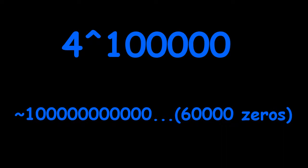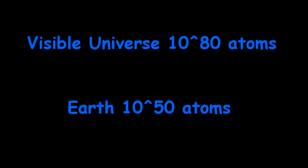By comparison, the number of atoms in the known universe is 10 to the 80, 80 digits, and in the Earth 10 to the 50, carbon much less than that.